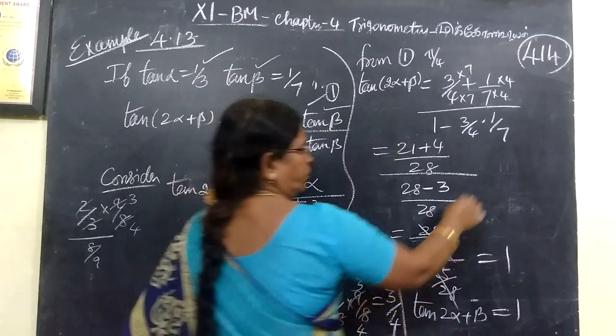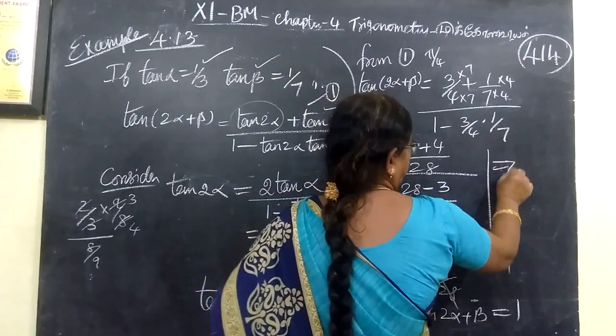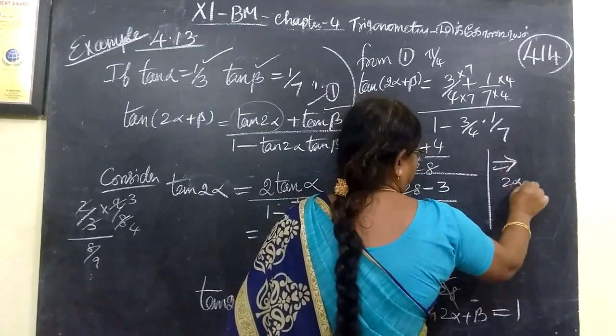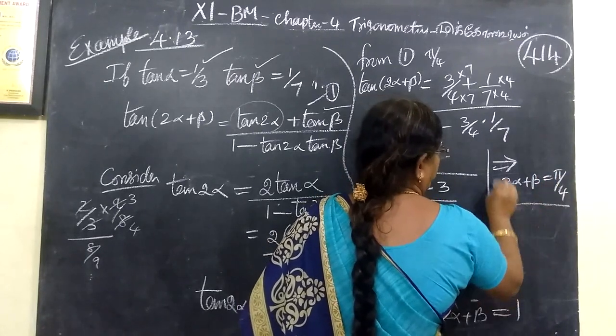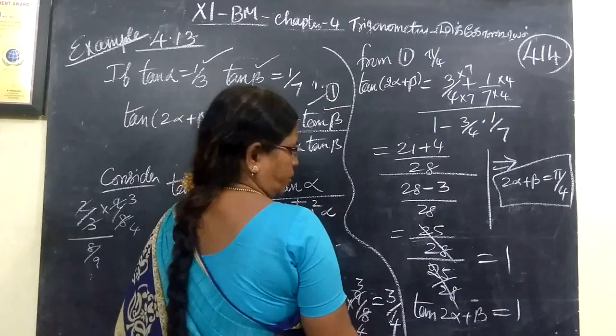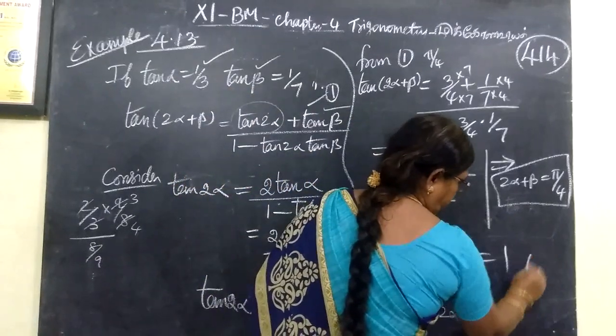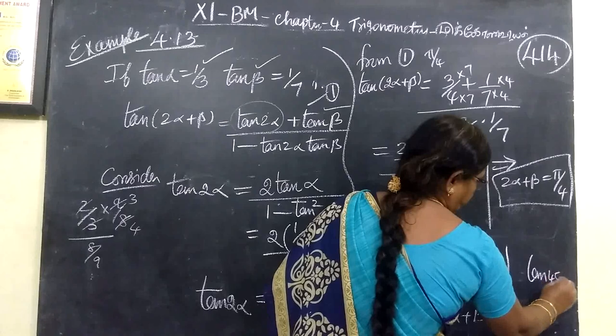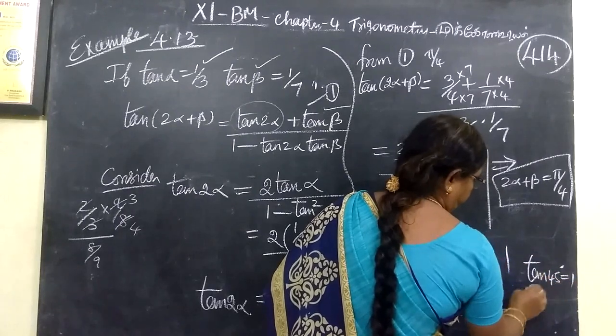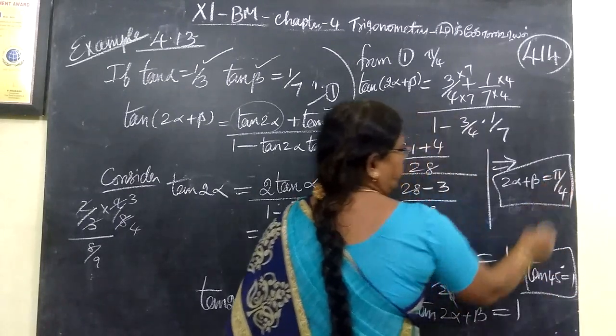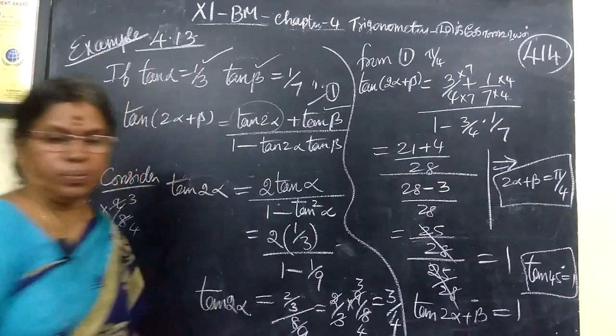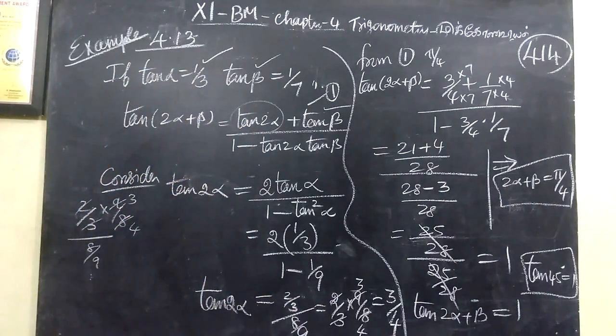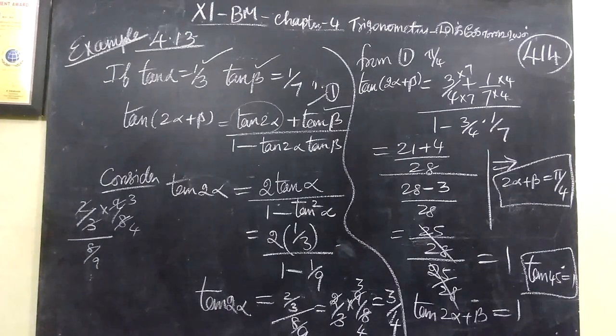Which implies 2α plus β equal to π by 4, 45 degrees. Tan 45 is 1. Tan 45 equal to 1, 45 degrees. Then in radian measure π by 4. So this is proved.